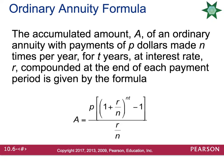The accumulated amount is A. The payment that you make, typically monthly, is P. The number of times you make it per year is N. T is the number of years you leave it in. R is your interest rate, and your interest is compounded at the end of each payment period.